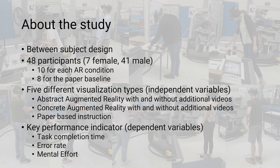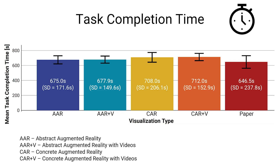We performed a statistical analysis of variance on the data with the following results. The participants with the paper instruction completed the tasks the fastest, followed by the two augmented reality instructions with the abstract visualizations. Both visualizations with the concrete holograms were the slowest, but there are no significant differences in the task completion time between the different visualization types.